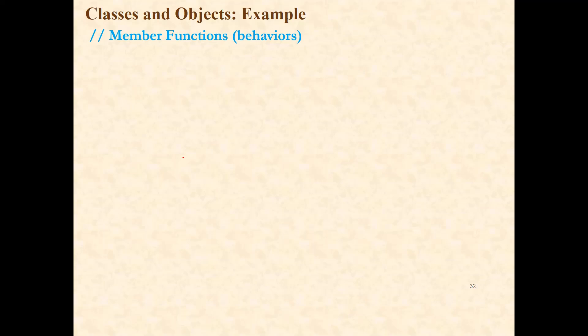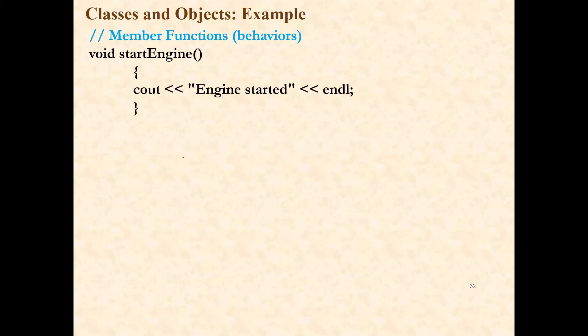Now, member functions. As we have discussed, classes are the framework — they are the template for creating objects. So inside every object, there are data members and member functions that should be framed inside the class. Inside the class, we will also define the member functions. There is one member function whose name is start_engine; its return type is void. With the opening curly bracket, the definition of the member function starts, and in this function, we will just display one message using cout — that is 'engine started'. That is the complete definition of the start_engine member function. You have to observe that the definition and declaration of the member function is inside the class.